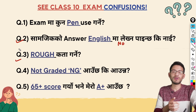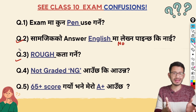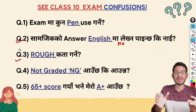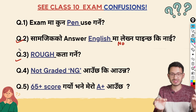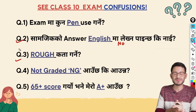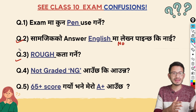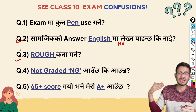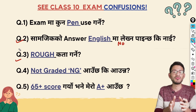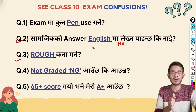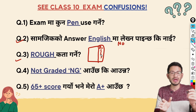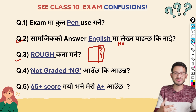Question 3 is about how to write rough work. For multiple-answer questions in the exam, you need to do rough calculations. Especially for mathematics, you need to be able to show your working. You will see a rough section on your answer sheet, and you should do your calculations in that same section.